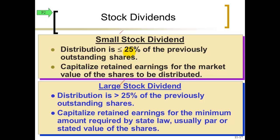For a small stock dividend you need to know the market value of your shares — what they're trading for on the stock exchange — as well as the par value. For a large stock dividend, you don't need the market value; you just need the par value. Both need the par value, but the small one also requires the market value.